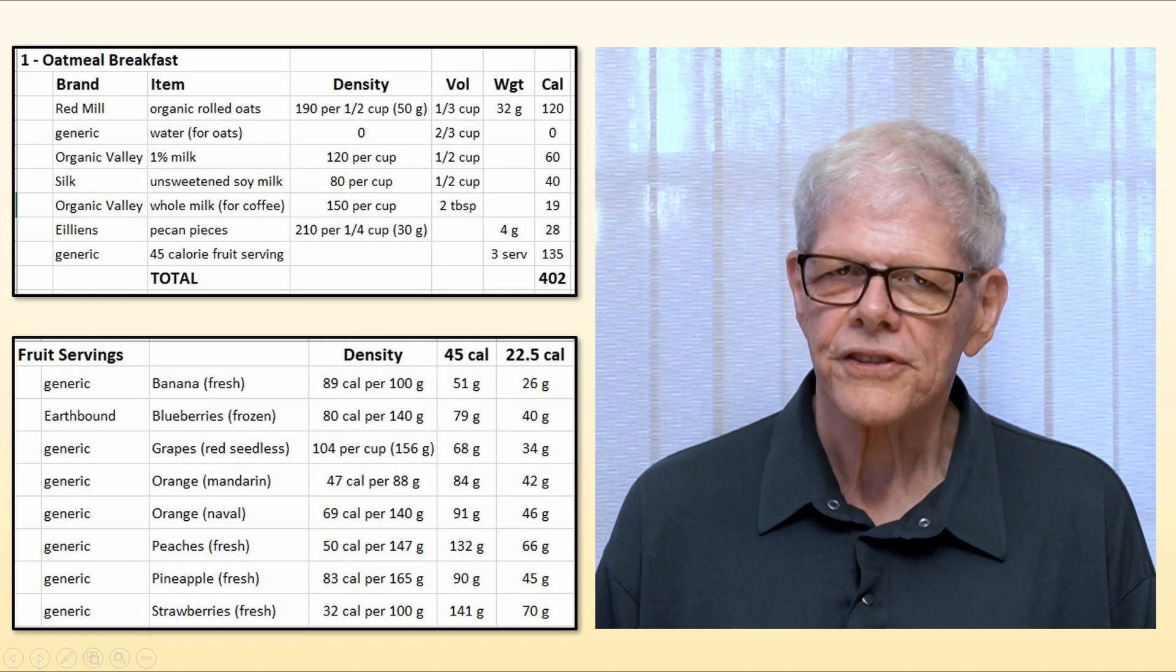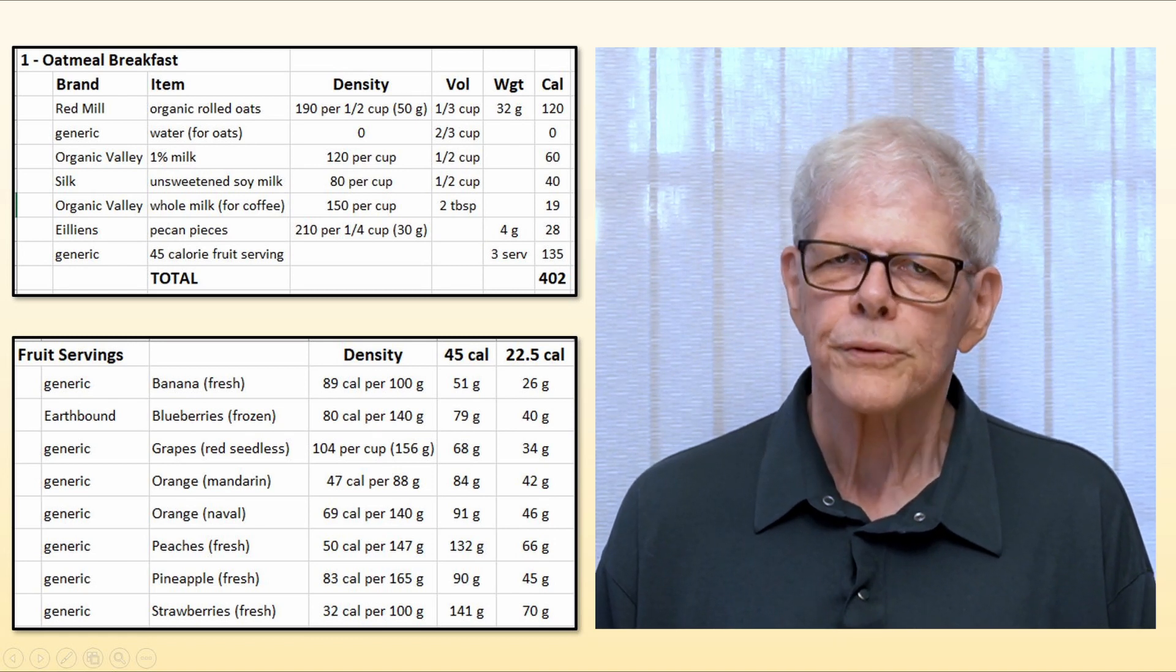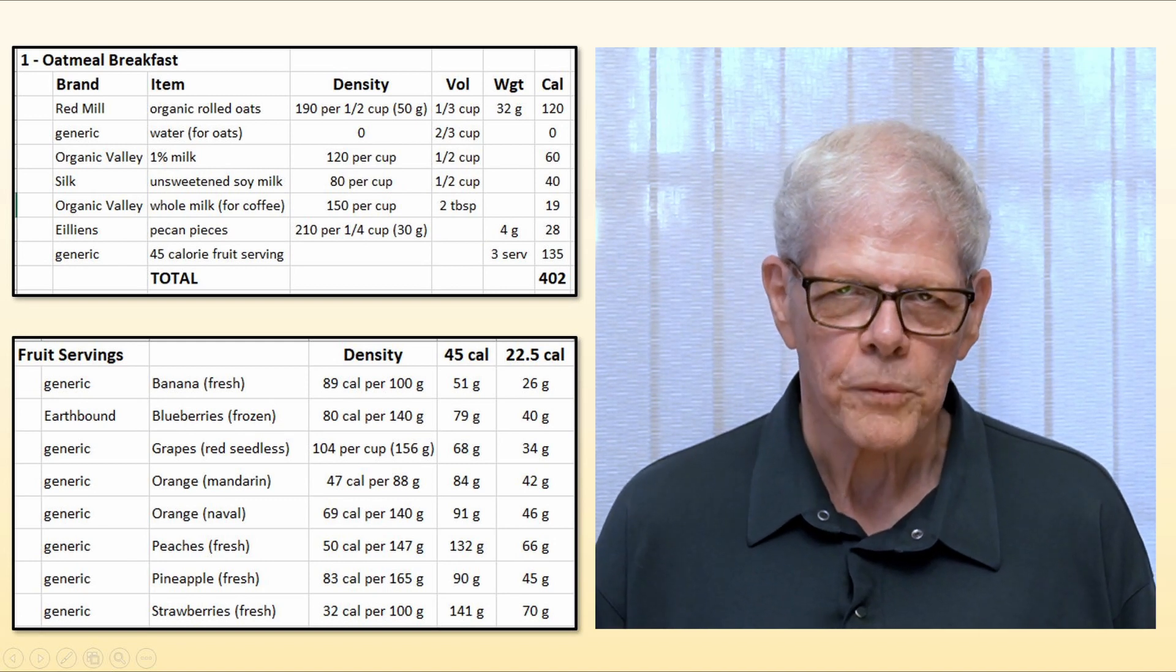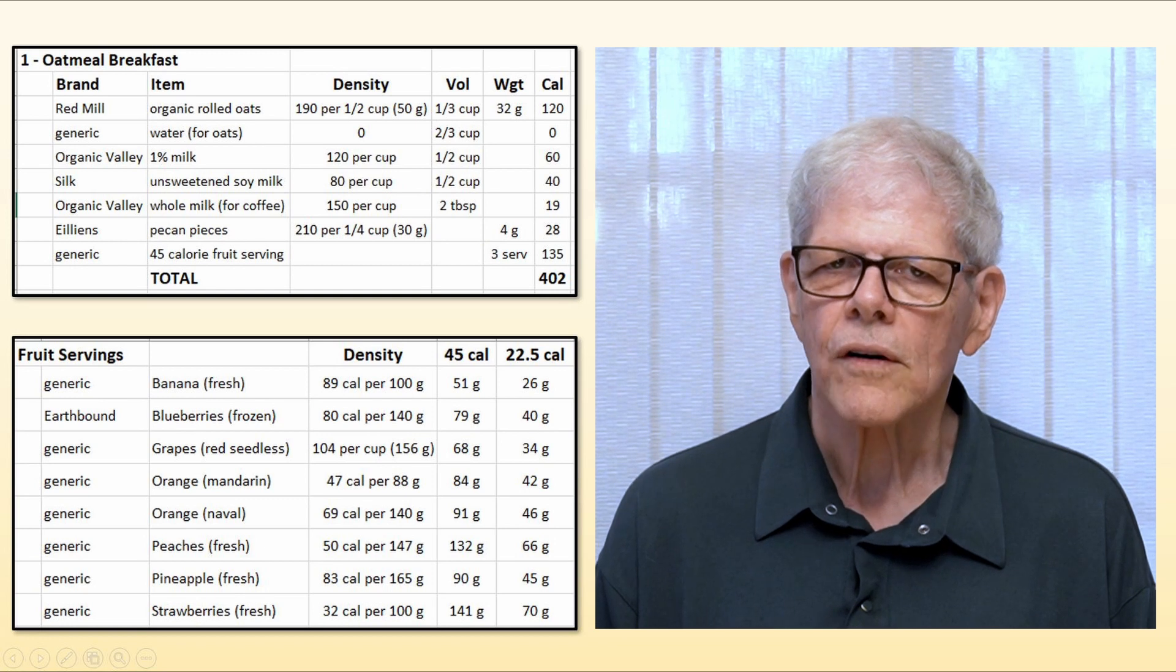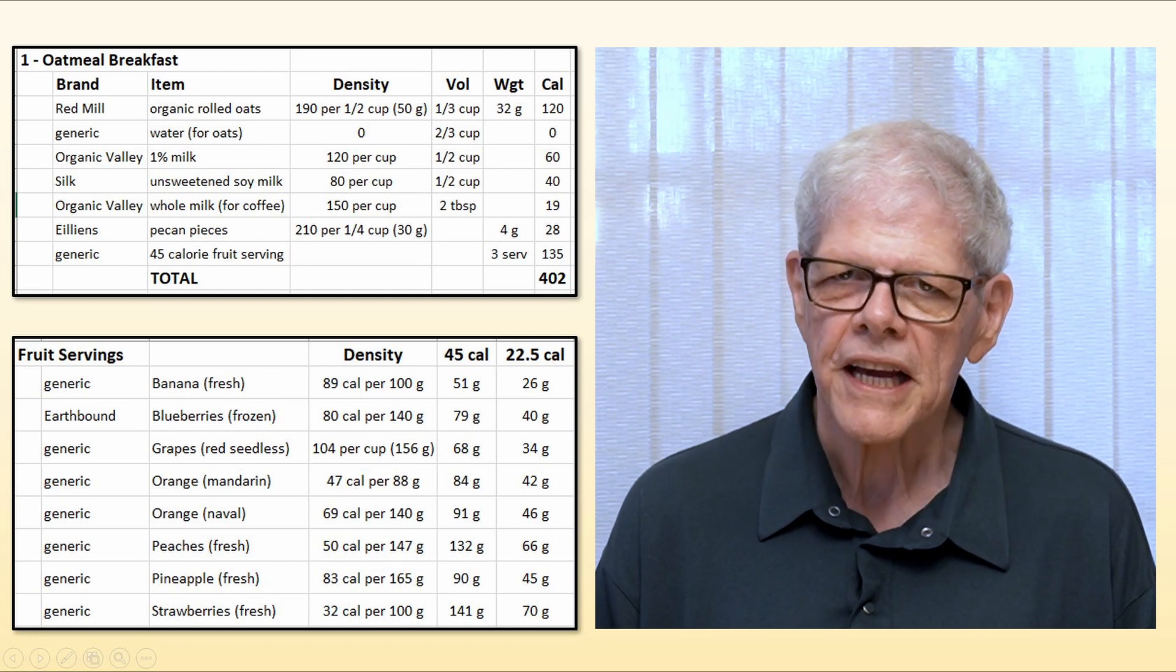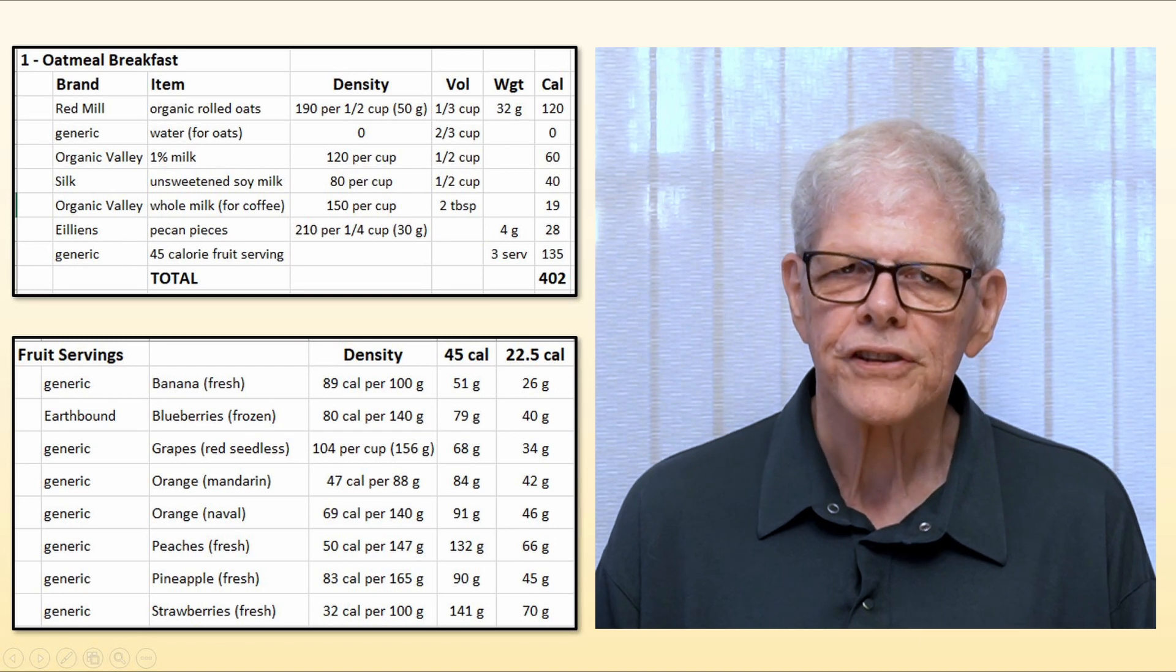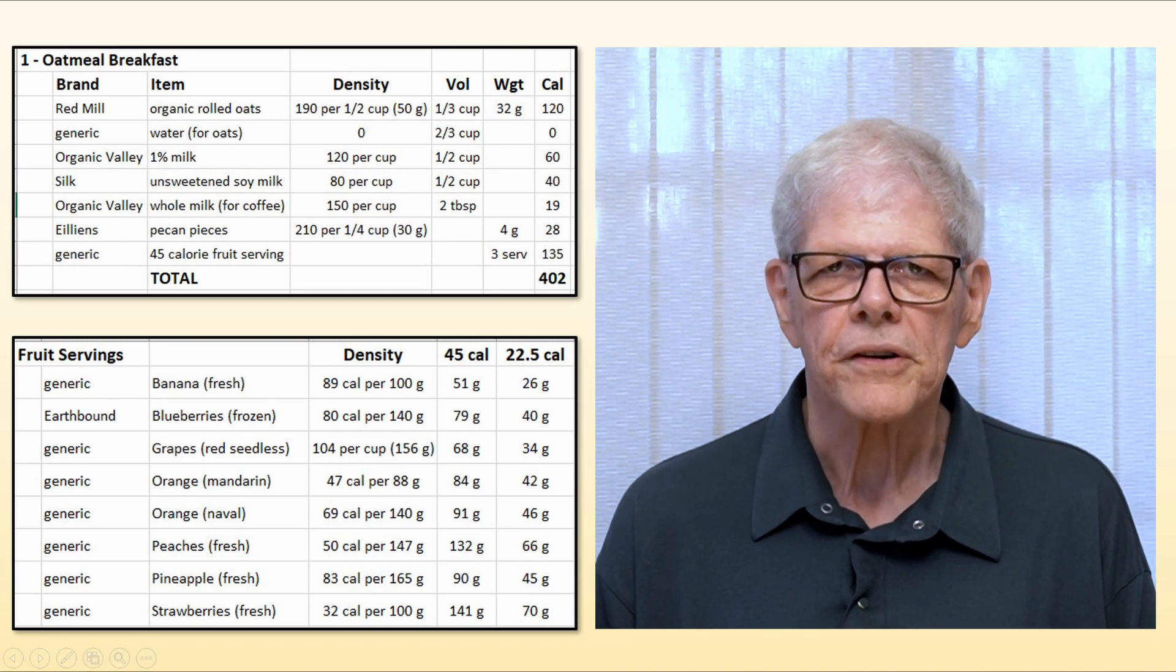Notice that the last line of the meal just says 45 calorie fruit serving. You may not want to do this until you get more experience, but since many fruits are seasonal, or I may not always have all of them on hand, this gives me the flexibility to have whatever fruit I choose without having to have a separate meal for each fruit.